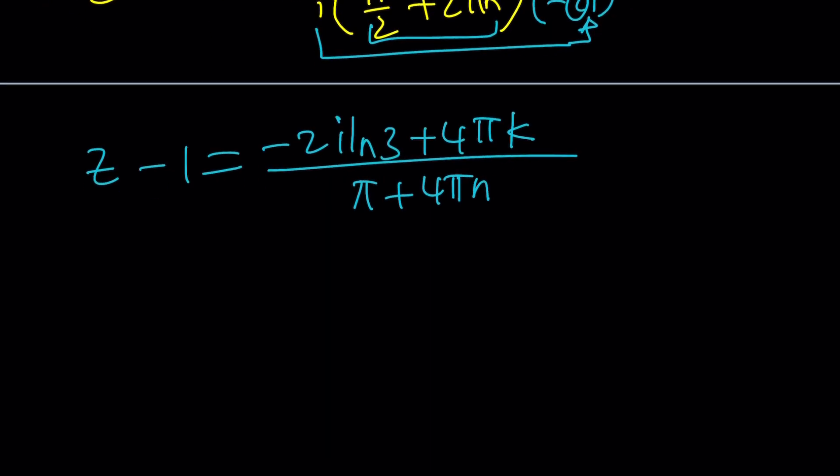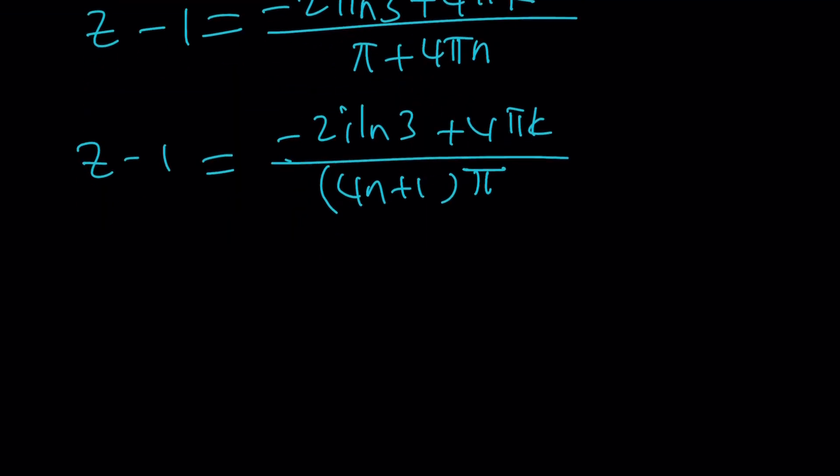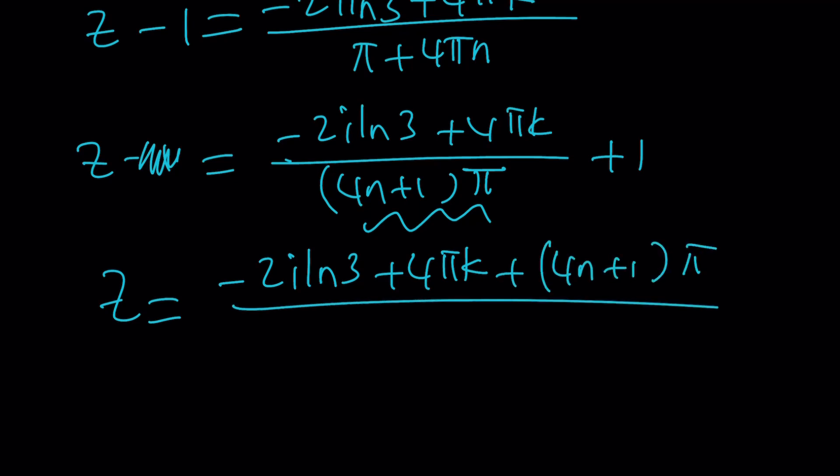And then we're going to go ahead and divide by this. The two canceled out. We ended up with pi plus 4 pi n. This is Z minus 1 still. Let's simplify as much as possible. And then we will just add one to both sides. You get negative i ln 3 plus 4 pi k. And then you kind of factor out a pi maybe and write this as 4n plus 1 pi. Now we can go ahead and add one. Z is going to look like this. Negative 2i ln 3 plus 4 pi k plus 4n plus 1 times pi. And all of that is divided by 4n plus 1 pi.